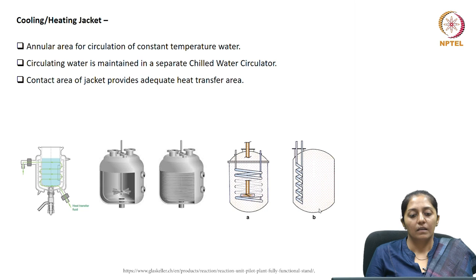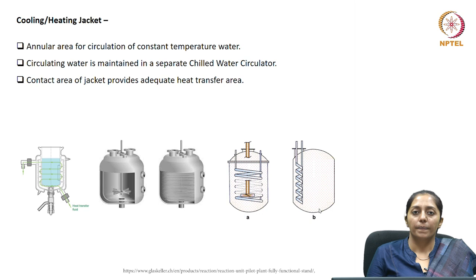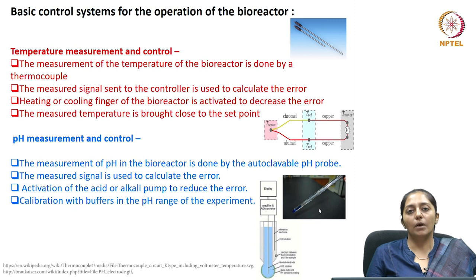The heating and cooling jacket arrangement involves an annular area of constant-temperature water. Depending on the size of the reactor, there are different arrangements: water from the chilling unit is circulated around the entire reactor body, or if the reactor volume is very small, heating or cooling fingers are inserted inside the reactor through which chilled water from the chilling unit is circulated to maintain the temperature of the liquid broth.